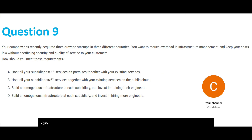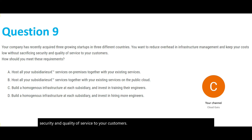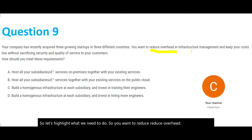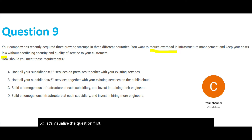Moving on to question 9. Your company has recently acquired three growing startups in three different countries. You want to reduce overhead and infrastructure management and keep your costs low without sacrificing security and quality of service to your customers. How should you meet these requirements? Let's visualize: suppose company XYZ has branches in France, India, and the United States — three different countries.